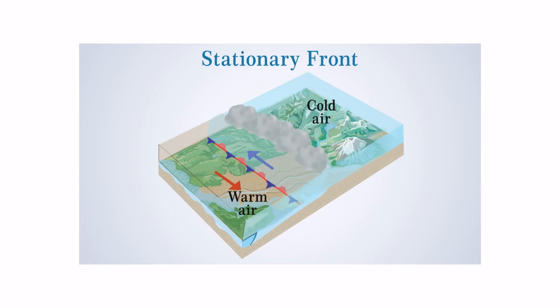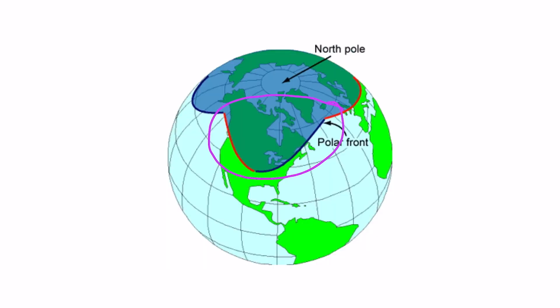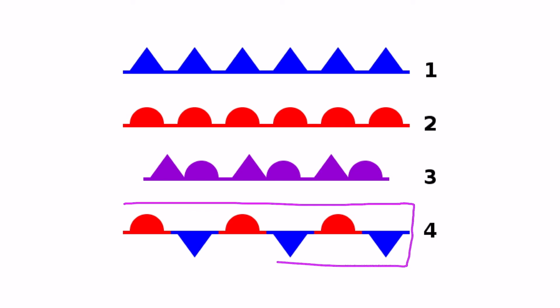Next, a stationary front has two different air masses on both sides — warm air on one side and cold air on the other. The winds in a stationary front blow parallel to the front and opposite to each other, so on one side winds blow one way and on the other side they blow the opposite way. An example of a stationary front is the polar front, and a stationary front is indicated with both semicircles and triangles on alternating sides of the line on a chart.